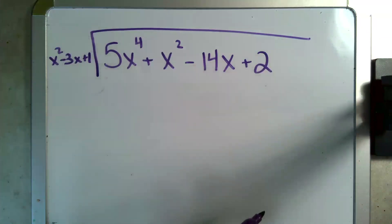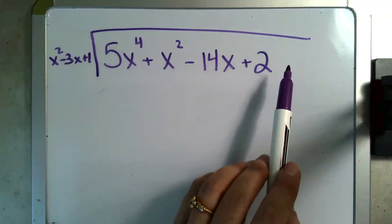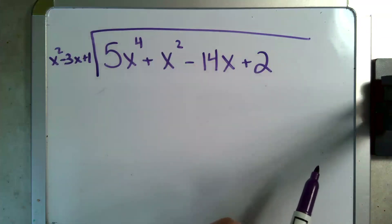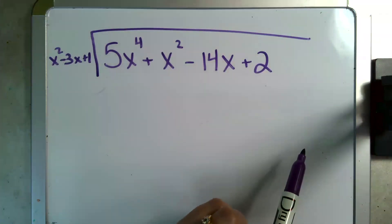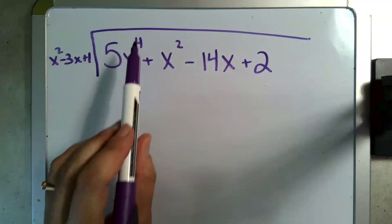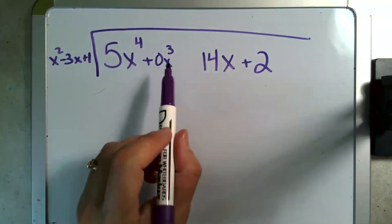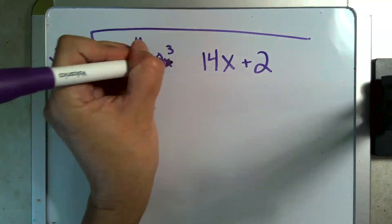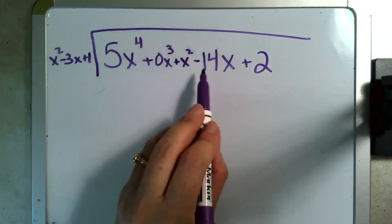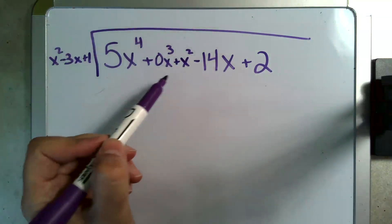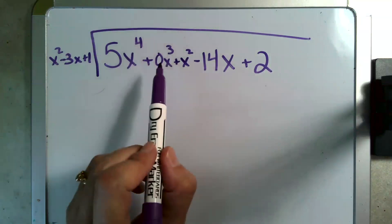Now the next thing I'm going to do is take a quick look at what's under here and make sure that I have a representative for each degree. So I have an x to the fourth, but then I jump to an x squared and I do not have an x to the third. So what I'm going to do is rewrite that section like this and then I'm going to put back my plus x squared and my minus 14x. So I'm just going to make space for that missing degree.